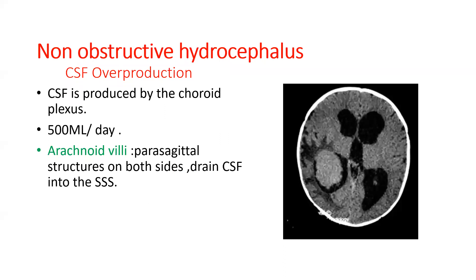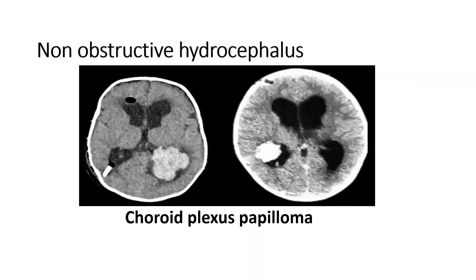In non-obstructive hydrocephalus, there is CSF overproduction. CSF is normally produced by the choroid plexus at 500 milliliters per day and absorbed by arachnoid villi — a parasagittal structure on both sides — draining CSF into the superior sagittal sinus. In choroid plexus papilloma, CSF production is increased up to 2.5 liters per day, and this is the only cause of non-obstructive hydrocephalus.